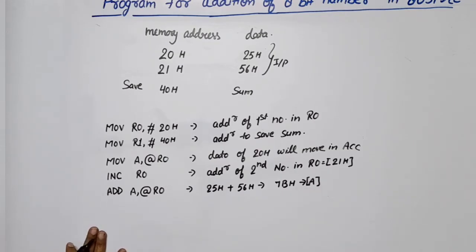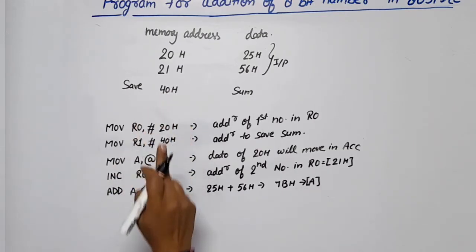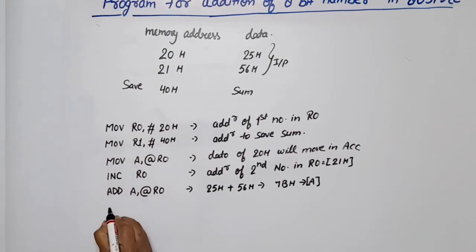Now we save the result at 40H. Since 40H is stored in source pointer R1, we write: MOV @R1, A. This saves the accumulator content. Then we stop the program by defining a HALT label: SJMP HALT. This stops the program.